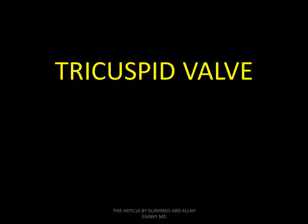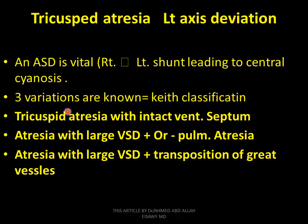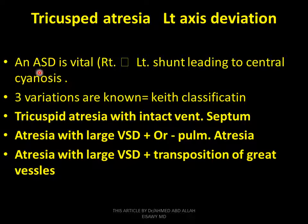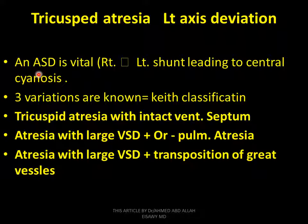Tricuspid valve — next valve in our discussion. Tricuspid valve with left axis deviation. ASD is vital: right-to-left shunt leading to central cyanosis. Three variations are known. ASD is vital because flow from ASD to right ventricle is impeded in tricuspid atresia. So blood in the right atrium — impeded by tricuspid atresia — must go through ASD to the left atrium and some to the left ventricle.